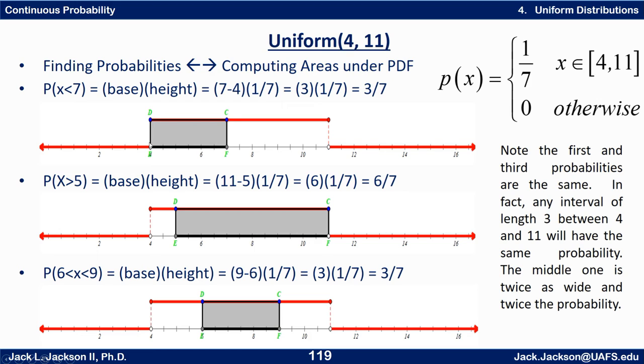So from 4 to 7 is a distance of 3 on the base, and the height is one-seventh all the way across. We've already figured that out. So the base is 3, the height is one-seventh. Multiply together, we get an area of 3/7. That's that area, which is that probability.